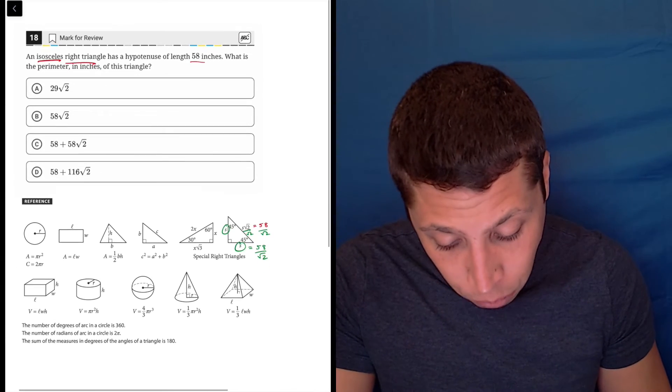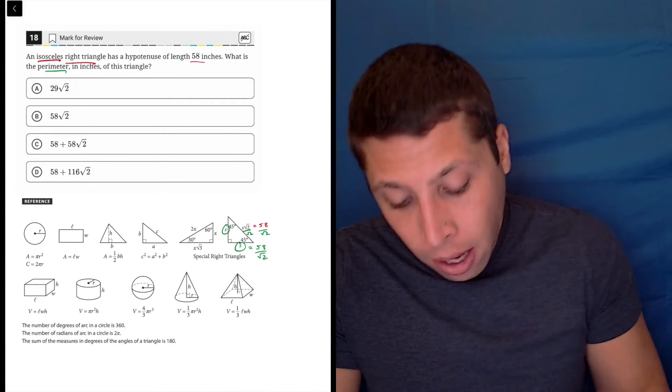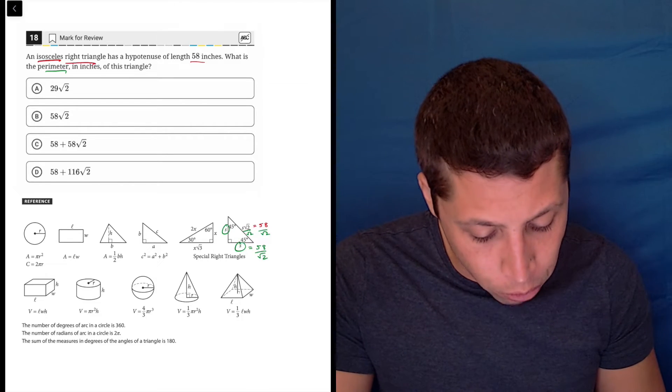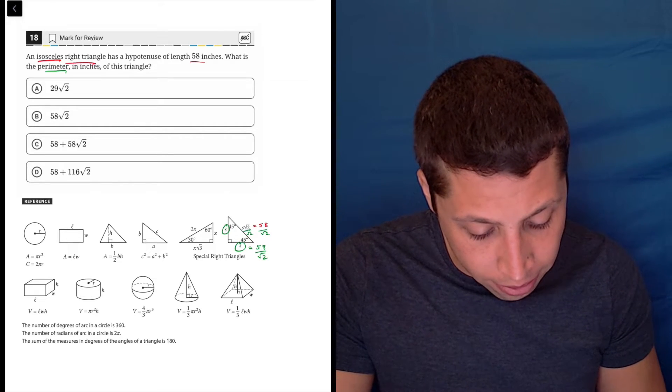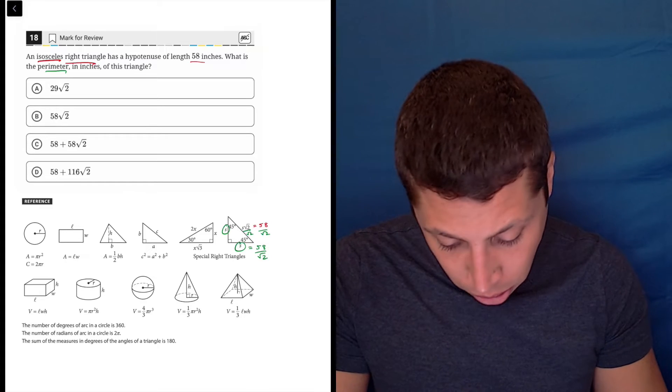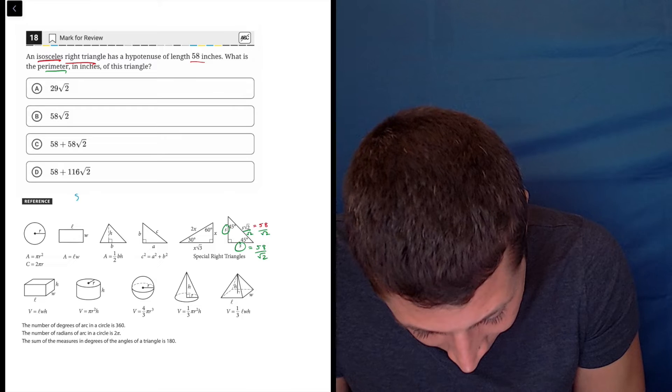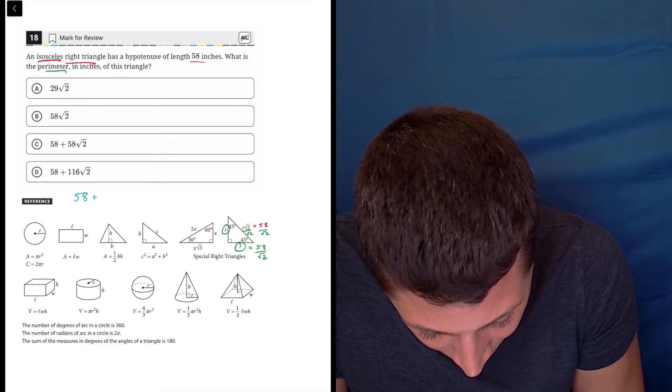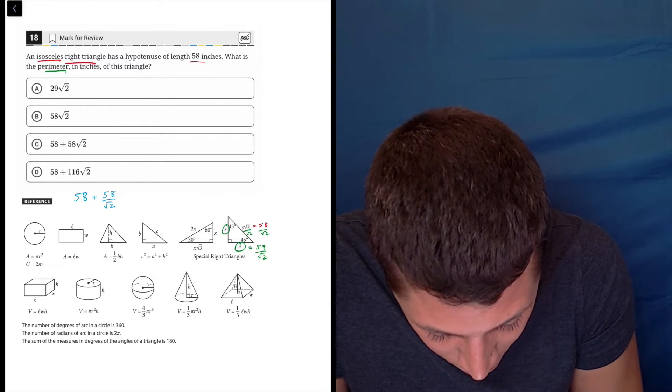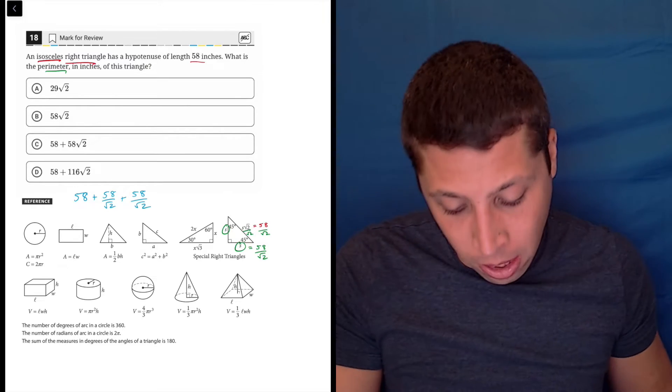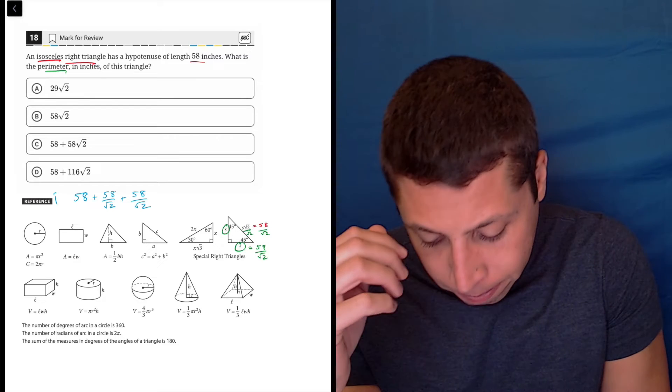What they're asking us for is the perimeter of this triangle. So perimeter is just to add up all the sides. So what do we have? Well, we have two s sides and the 58 root 2 side. So I'm going to squeeze this in here. So we have 58 plus 58 root 2 plus 58, or sorry, over root 2. That's my perimeter.